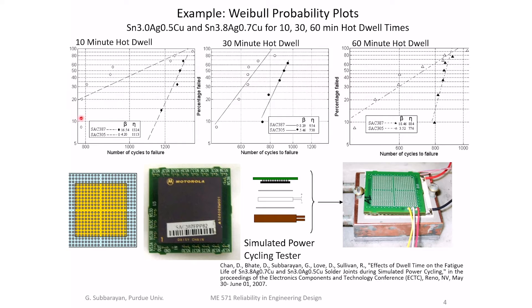This shows the percentage of components that have failed. The questions that arise when you do these tests include: how many components should I test, and how do I characterize these uncertainties? We also want to know if a particular model fit — like this line here — is a reasonable fit for the data, or whether we should have used a different model. These are all questions we will address in this course: how to fit this data, how to analyze it, and how to determine whether the fit is good or not.